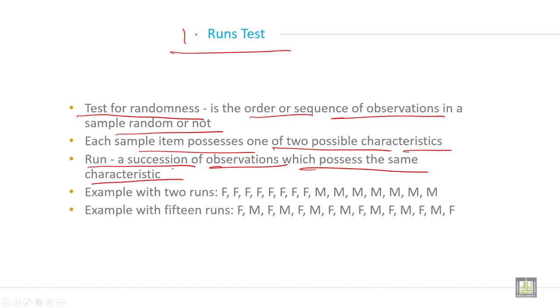For example, this is one type and this is another type - this is two different runs. An example with fifteen runs: F, M, F, M, F, M, F, M, F, M, and so on.